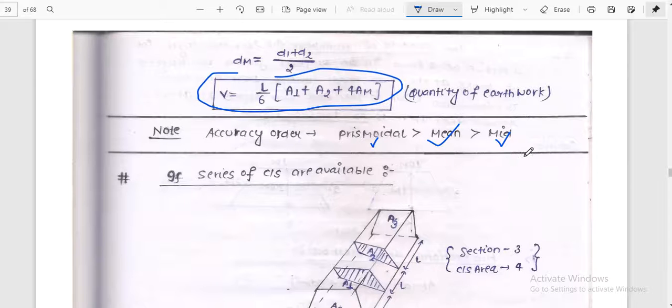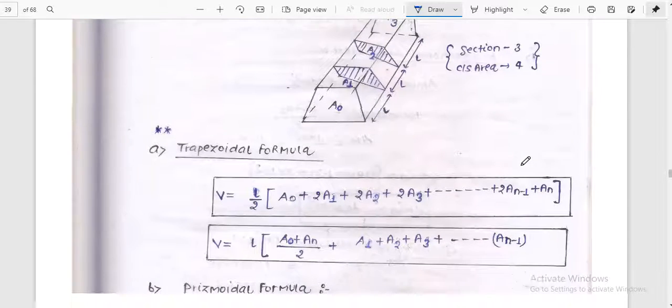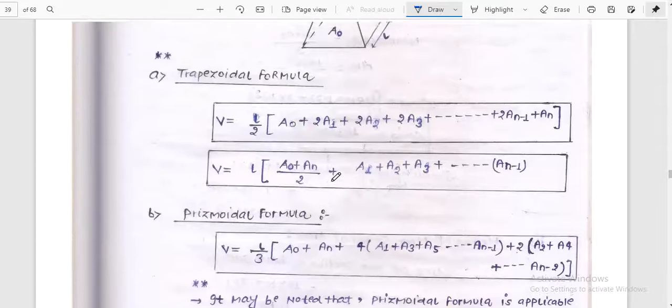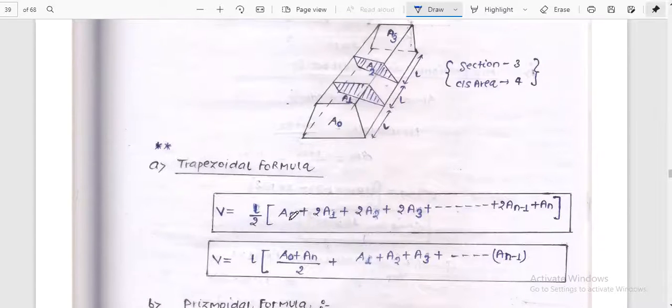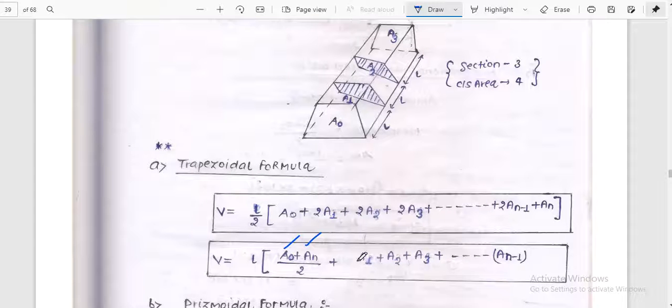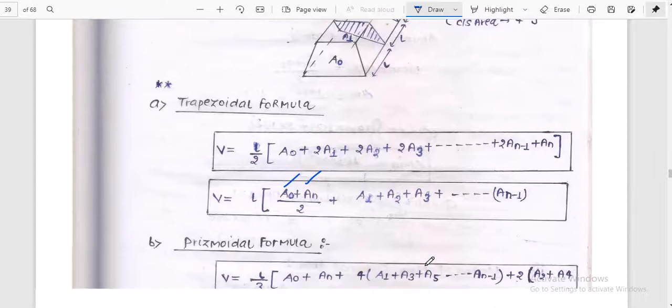Trapezoidal formula. Trapezoidal mid ordinate formula is very important. V is equal to L by 2 times A1 plus A2, or you can write V is equal to L into A0 plus An divided by 2, so first area plus last area divided by 2, plus A1 plus A2 plus A3 plus An minus 1.